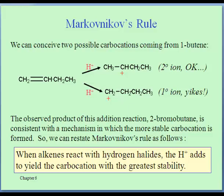When Markovnikov formulated his rule, he could use it to predict the major products, but he didn't know what a carbocation was and he didn't know much about the mechanism. We can have another understanding of Markovnikov's rule and why it works the way it does, and it goes back to carbocations and ranking their stabilities, because the first thing that happens in the mechanism was that the hydrogen adds to one of the two carbons where the double bond is.